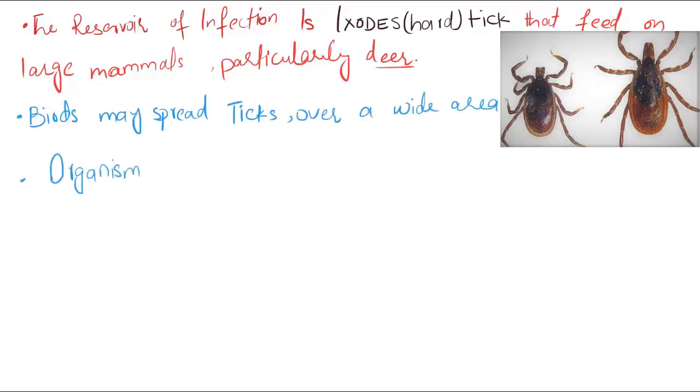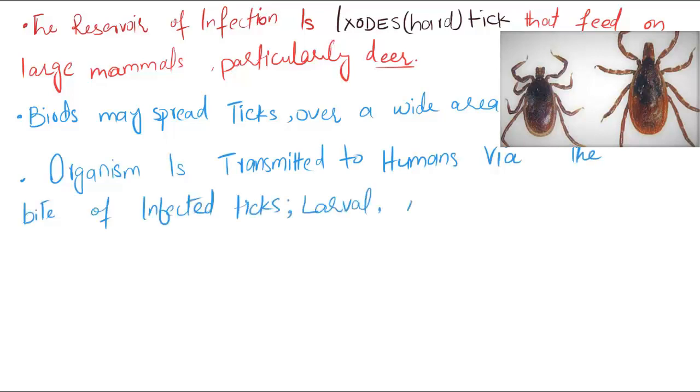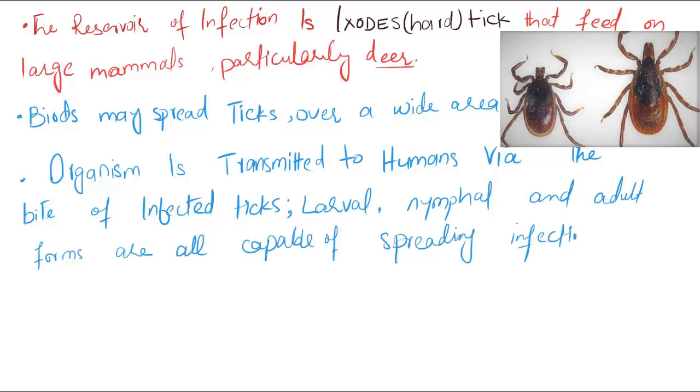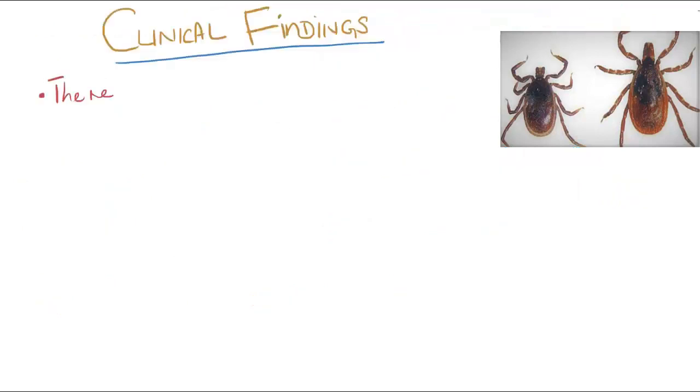The organism is transmitted to humans via the bite of infected ticks. Larval, nymphal, and adult forms are all capable of spreading infection. Ehrlichiosis is a common co-infection with Lyme disease.